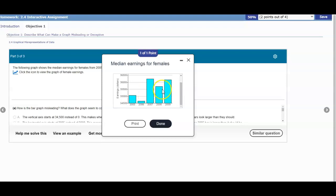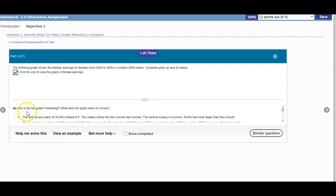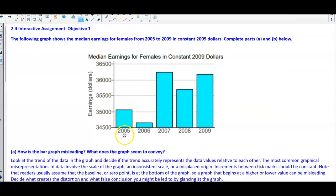So here is the picture. I'll have it on the next page. The first question wants us to ask, how is the bar graph misleading and what does the graph seem to convey? So here is our graph.